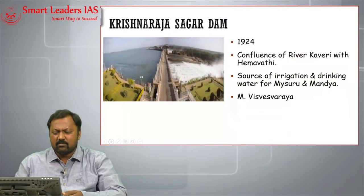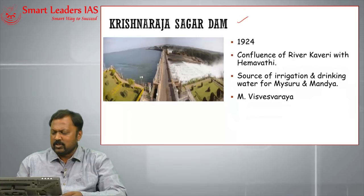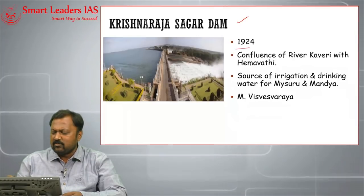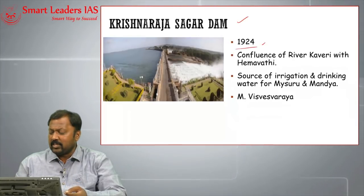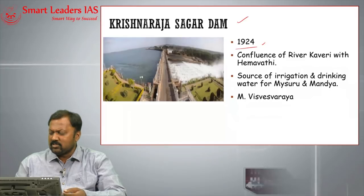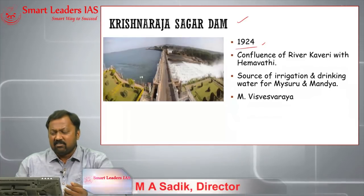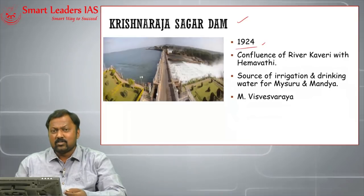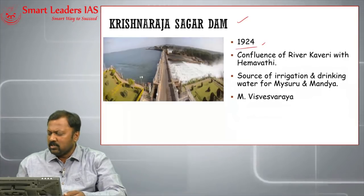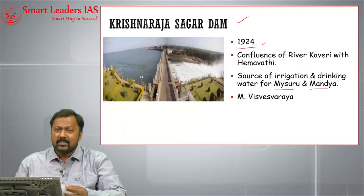The Krishna Rajasagar dam was built in 1924 at the confluence of the Cauvery with the Hemavati. It is a very important source of irrigation and drinking water for cities like Mysore, Mandya, and Bangalore.